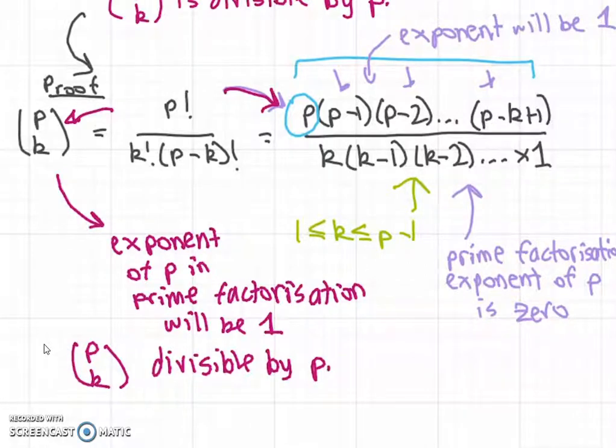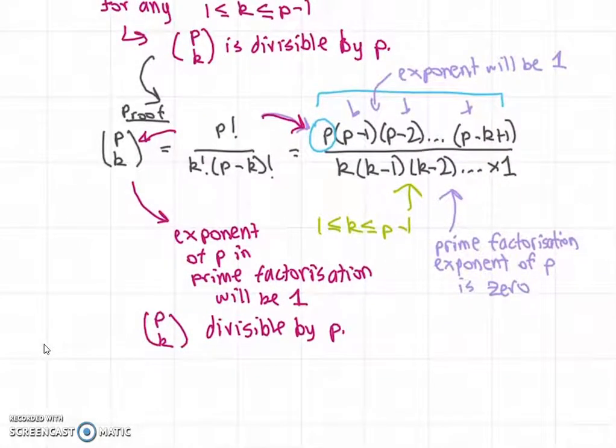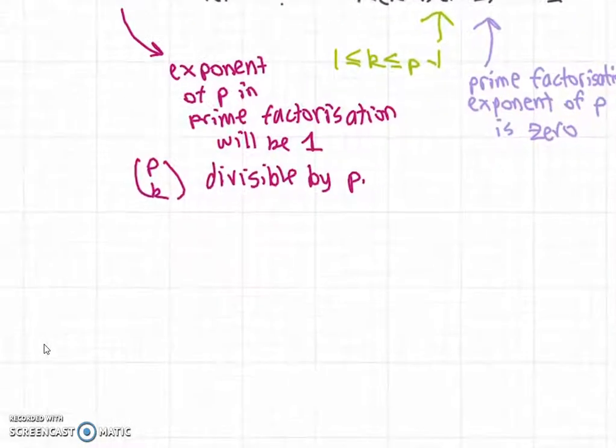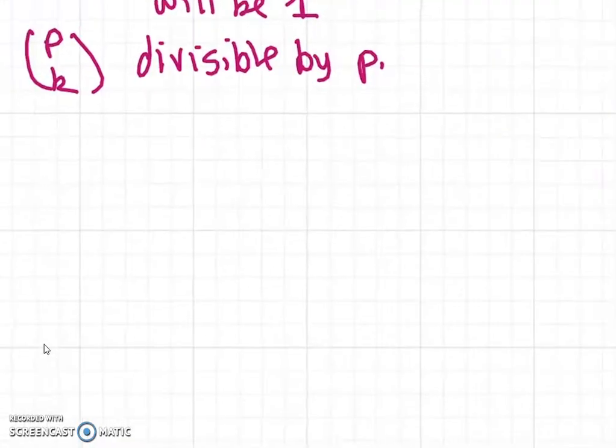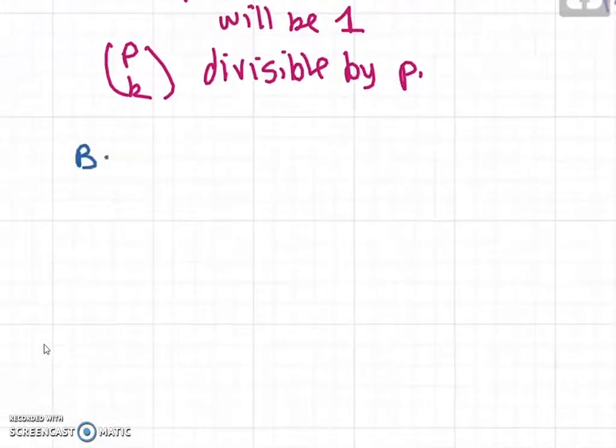This proves the lemma. Now we'll use this lemma in an induction proof of Fermat's Little Theorem. We'll induct on the values possible for a in modulo p.